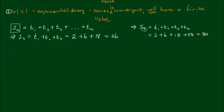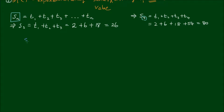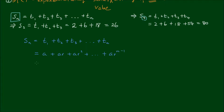Let's derive that formula — it's quite a simple derivation. In general, s sub n is the sum to the nth term: t1 plus t2 plus t3 plus so on until tn. Writing it out in terms of the general expression, the first term is a, then ar, ar squared, and so on up to ar to the n minus 1. We can factor out an a, giving us a times the quantity 1 plus r plus r squared plus so on plus r to the n minus 1.